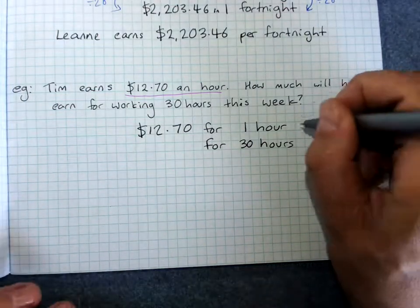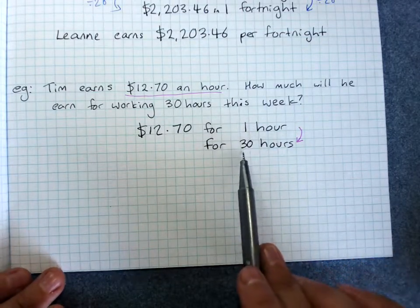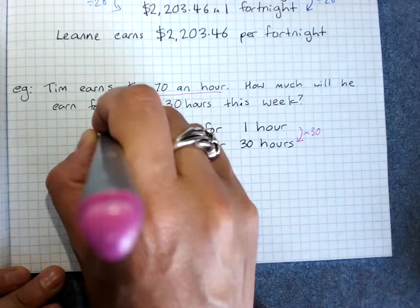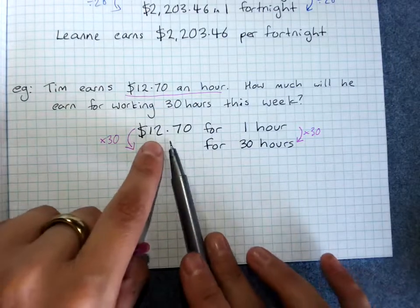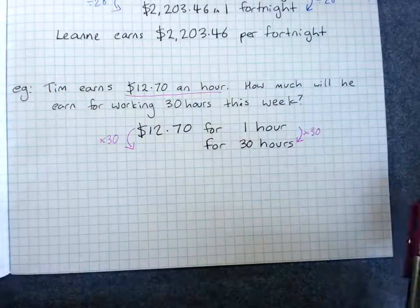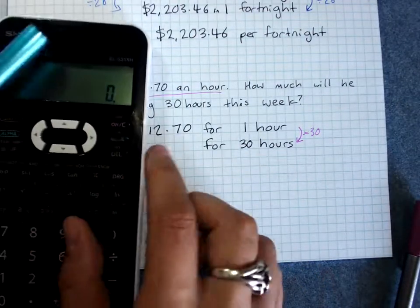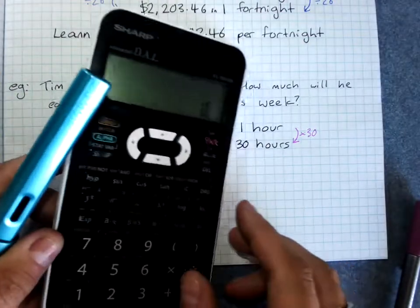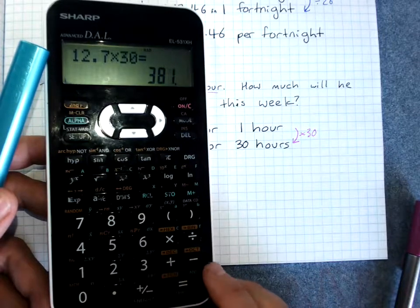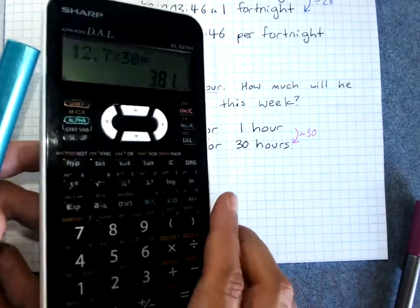How did I get from 1 to 30? It's always going to be times or divide. 1 times 30 gives me 30, so I do times 30 on this side as well. That makes sense — if I've got $12.70 for 1 hour, I've got 30 lots of that for 30 hours. Setting it out like this helps us not get mixed up about whether we times or divide. $12.70 times 30 equals $381.